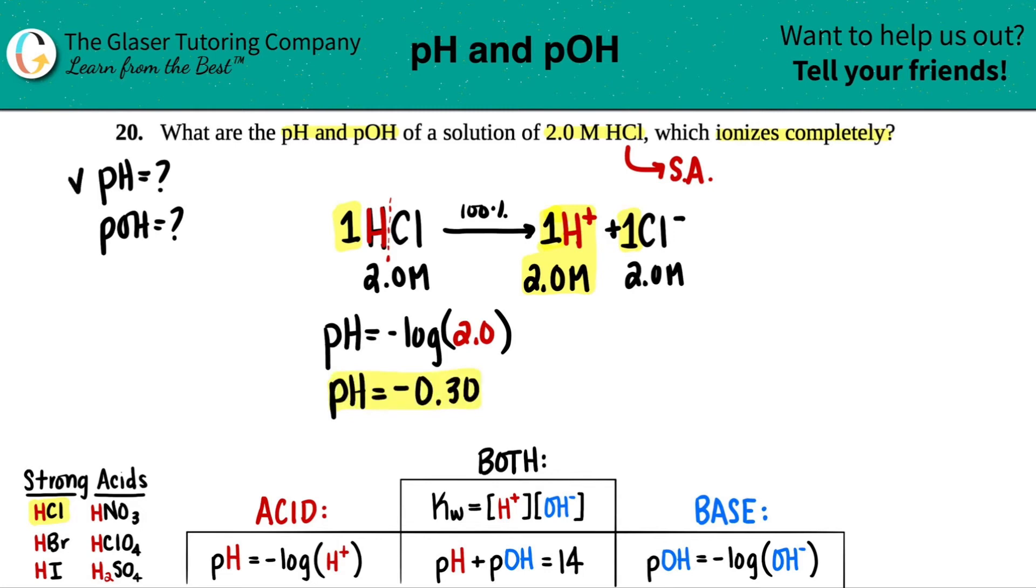So we found out the first number. Now we just have to find out the pOH. And now we're going to use this equation because I just found out the pH. I'm going to find out the pOH. And 14 is 14.